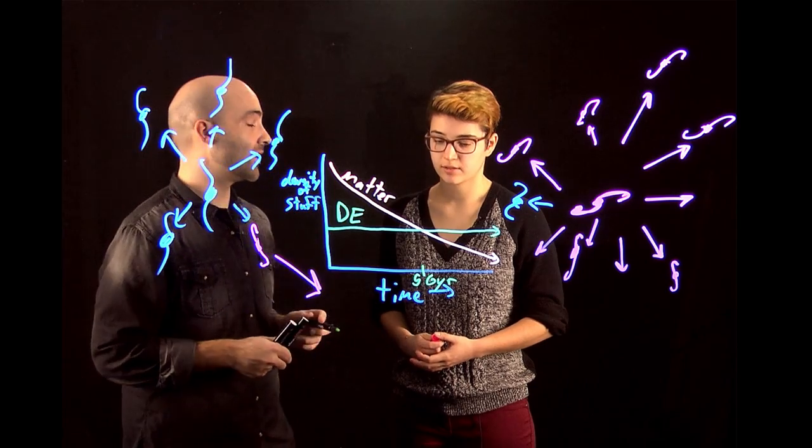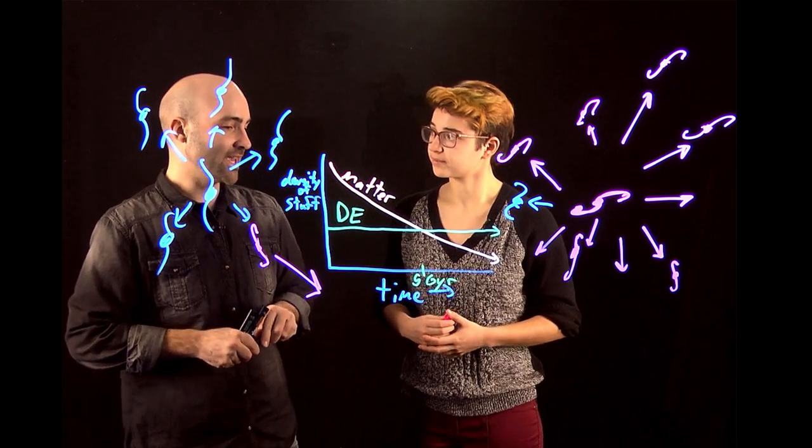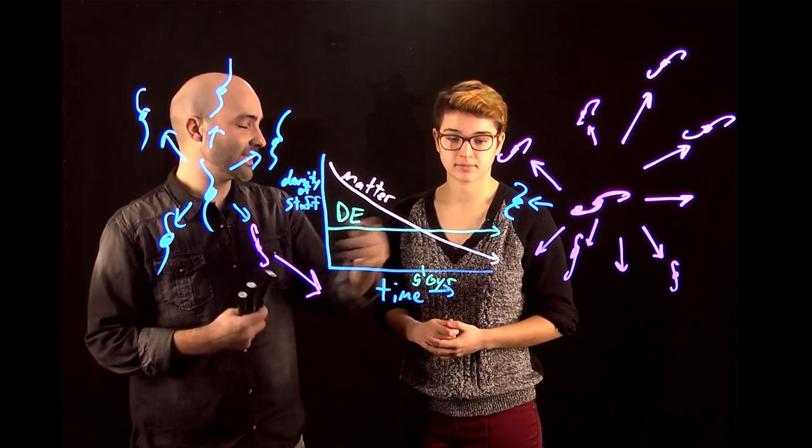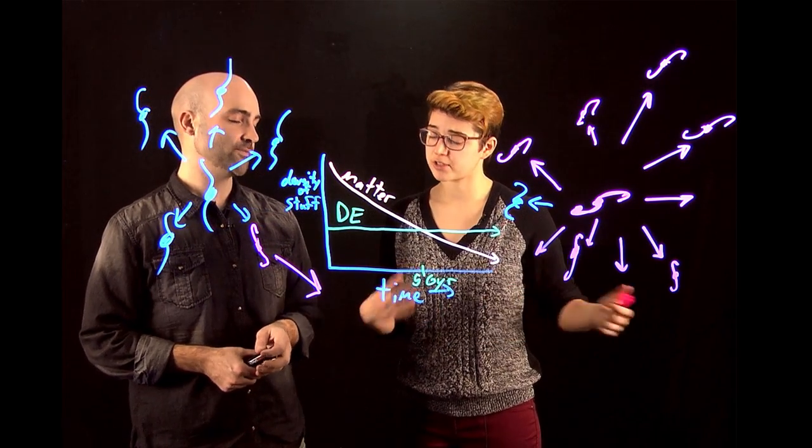Giga year, G-Y-R. Giga, like mega, giga year, billion years. Years ago, back then. And now the universe is like mostly dark energy. But it wasn't always the case. That's exactly right. Mostly dark energy.